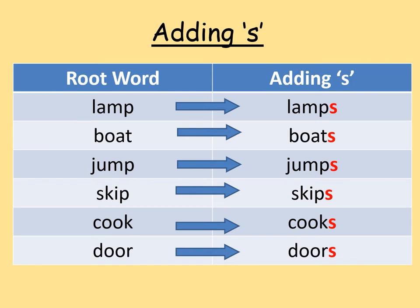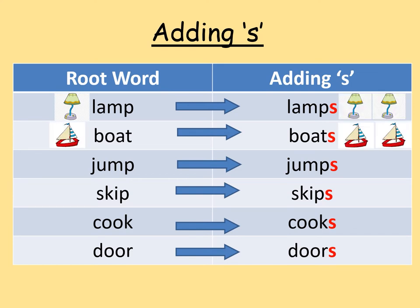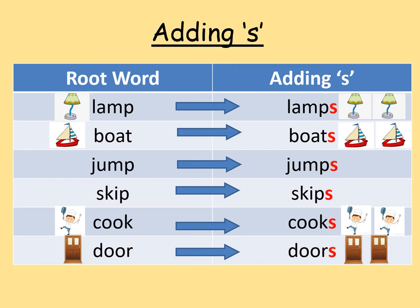When we want to make words a plural or into the present tense, most of the time for most words we just add s. So lamp would become lamps, boat would become boats, jump would become jumps, skip would become skips, cook would become cooks, door would become doors.